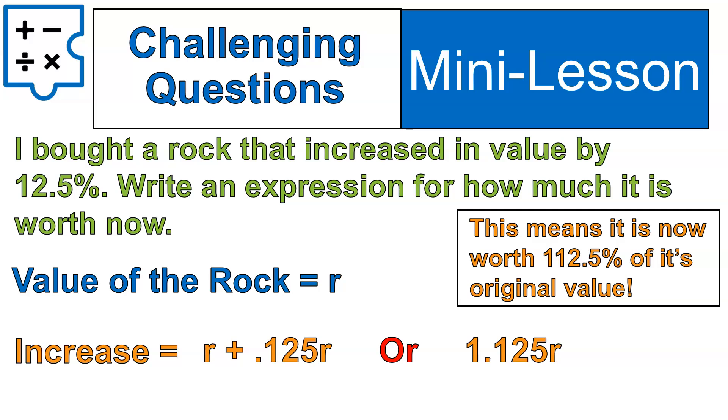This means that it's now worth 112.5% of its original value, which makes sense. It's worth the 100% plus it increased by 12.5%, so it's going to have an overall value of 112.5% of its original value. We don't know what the original value was, but we do have an expression that we can calculate it. Either of these two answers, most likely you will see the first one more often, R plus 0.125R. You'll see that one probably more often than you'll see the 1.125R. Although, again, I like the one on the right better, personally. I use that more often in real life.